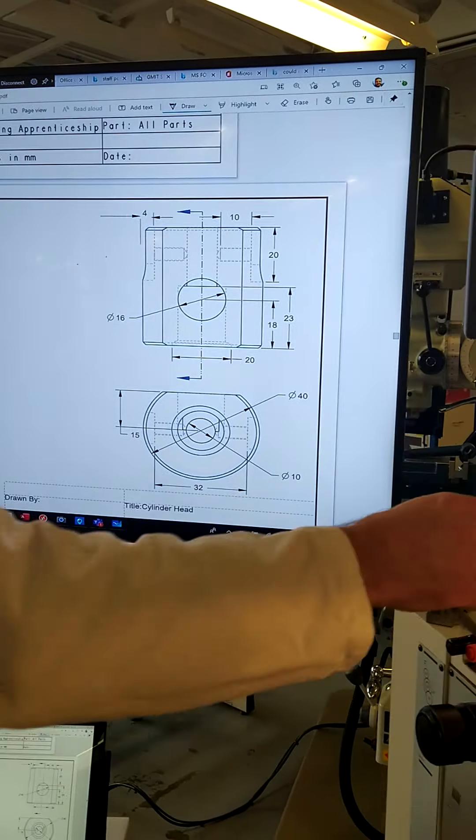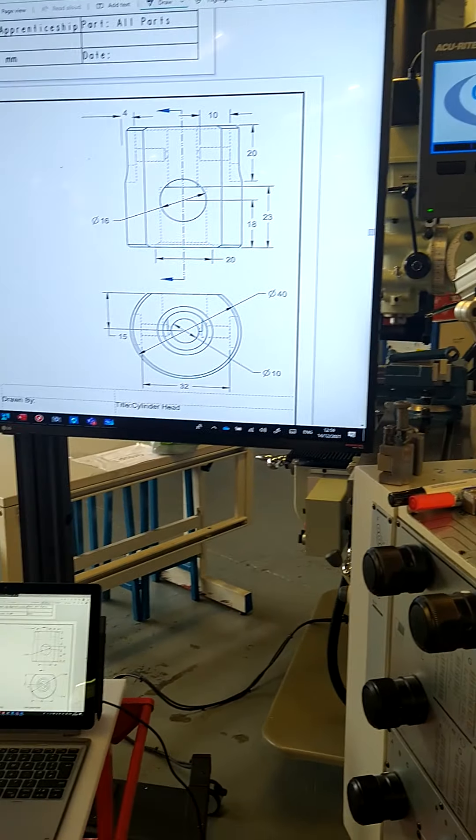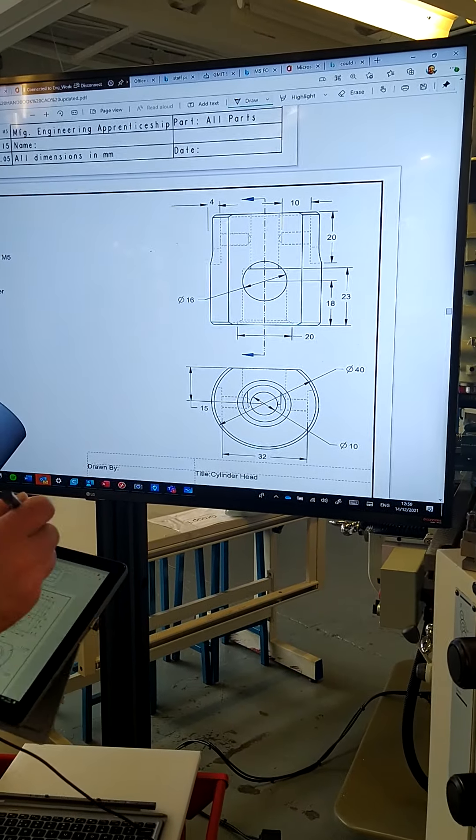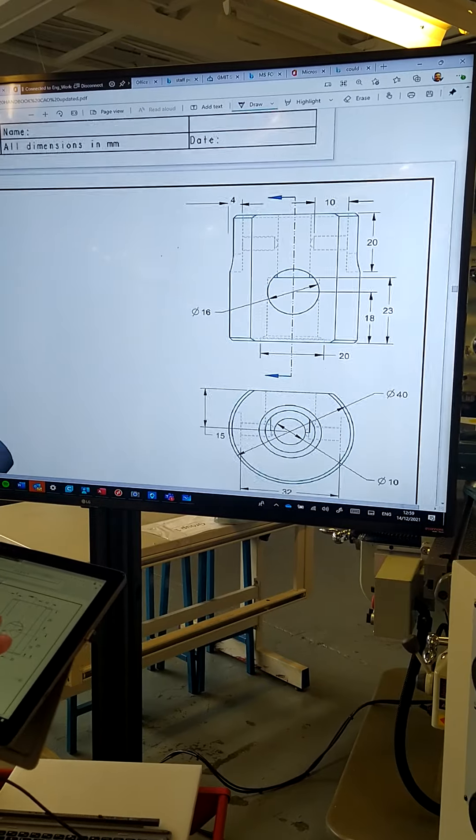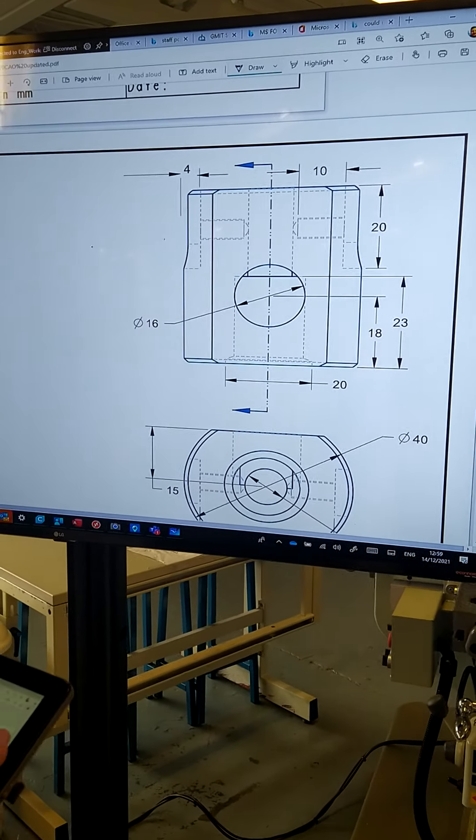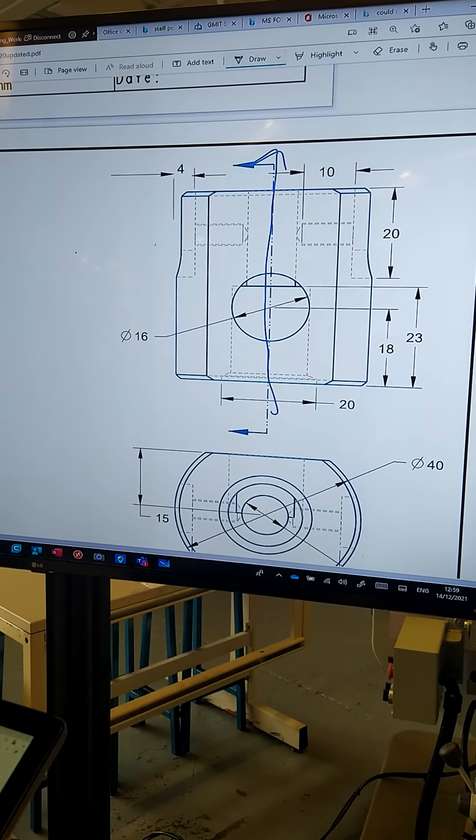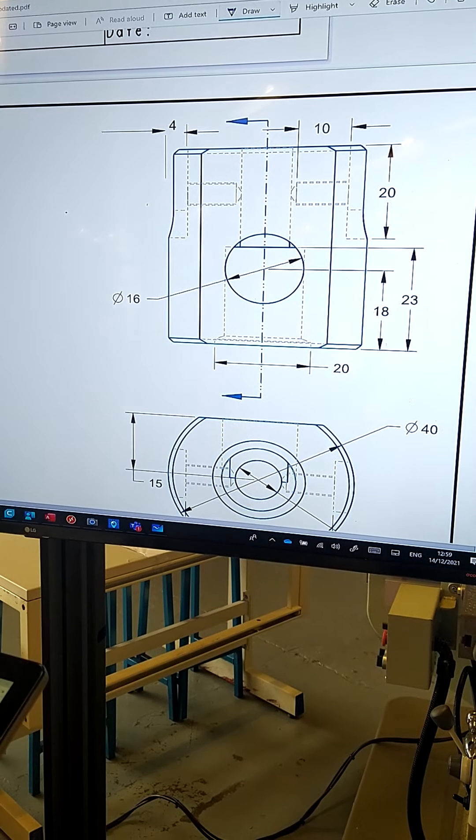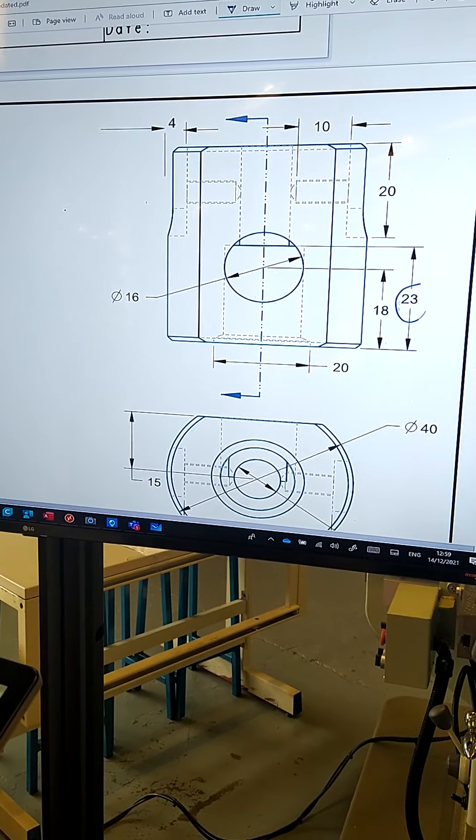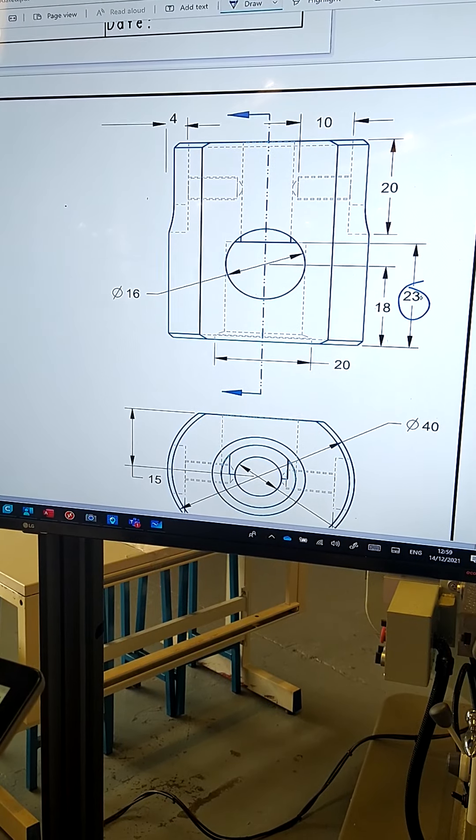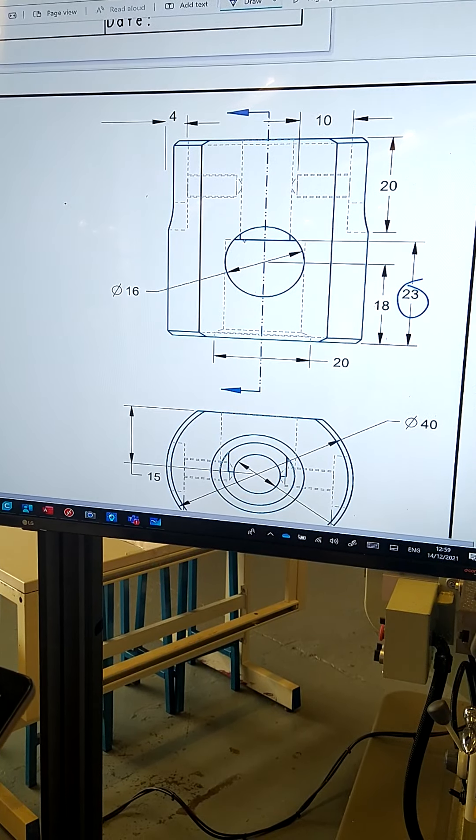Followed then by distinctive holes with certain depths. So looking at that over here, the 9.7 hole goes straight through the part. And then when that's drilled, we're going to drill the diameter 16 hole to a depth of 23 millimeters.